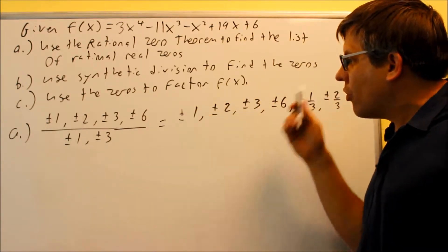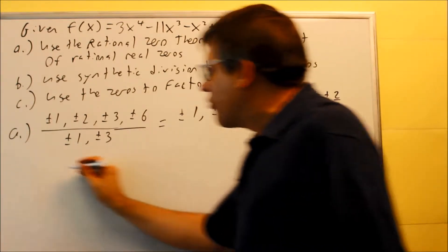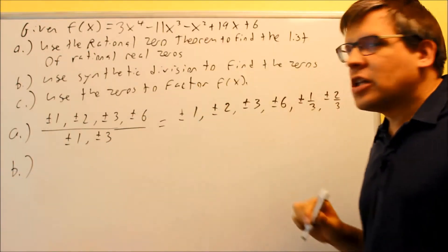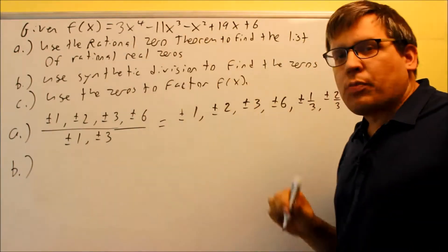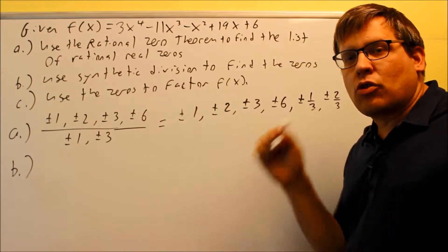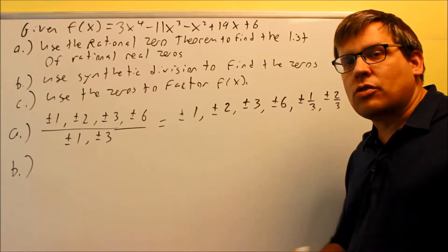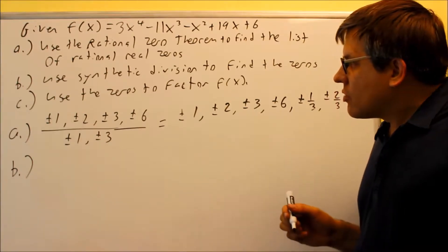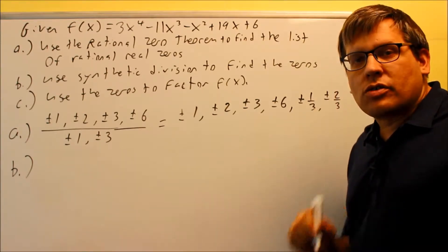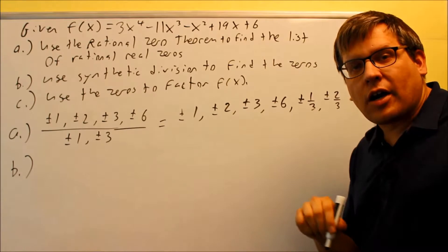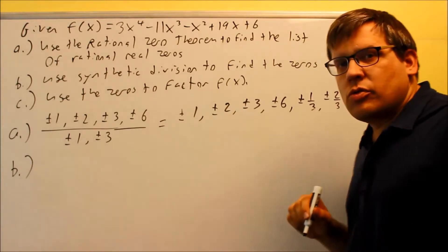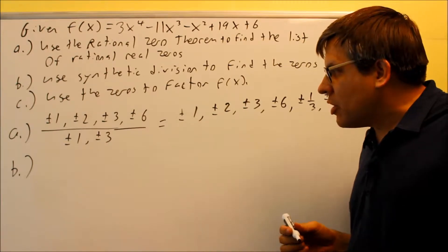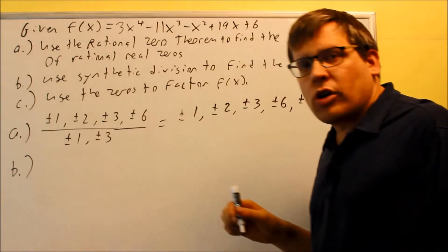So this is your completed list for Part A. Now for Part B, this is where we use synthetic division. Because we have a fourth power, we want to take this down into a quadratic, and we can use that to either factor or use the quadratic formula to find the other zeros. I want to use either a graphing program or my calculator to figure out what those two zeros are going to be. Looking at the graph, I can see two numbers that are going to work here.